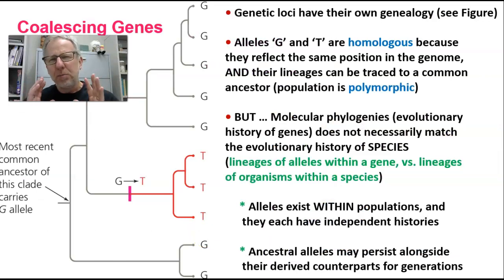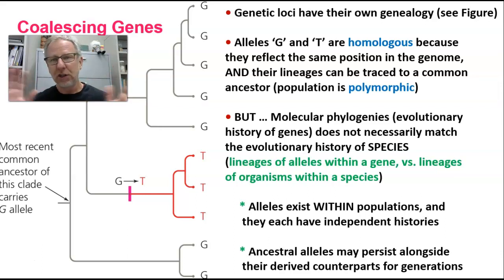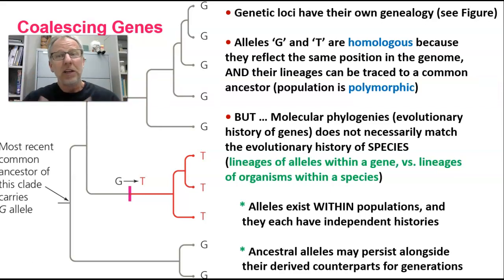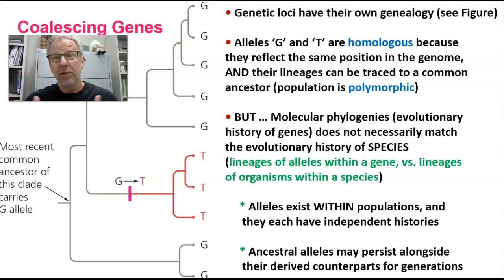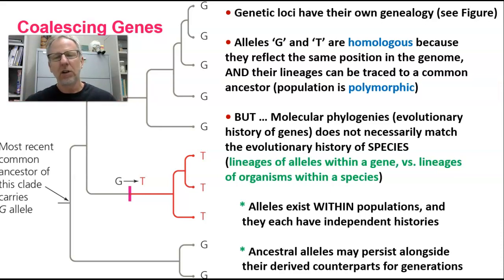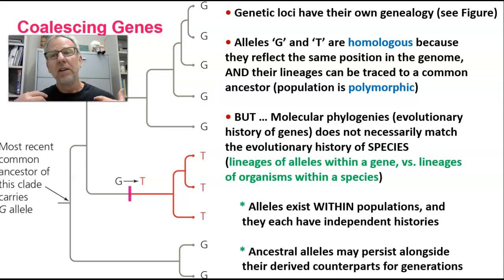Just like species have their own genealogies — they fit into a phylogenetic tree with other species, and we can trace their evolutionary history and figure out the genealogies of individual species — we can also figure out the genealogies of individuals. Imagine your own self being part of a family genealogy that you share with your siblings, your parents, cousins, aunts, uncles, and on back. But genetic loci also have their own genealogies, their own evolutionary histories.